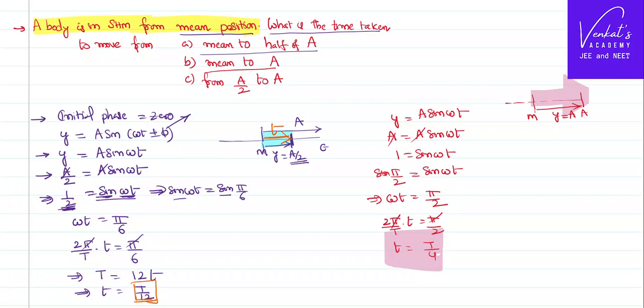Now there is a last question, the third question. From a by 2 to a. See carefully, I will draw the diagram again for you. Mean position to extreme position to amplitude. We have found that it takes a time of T by 4 here.